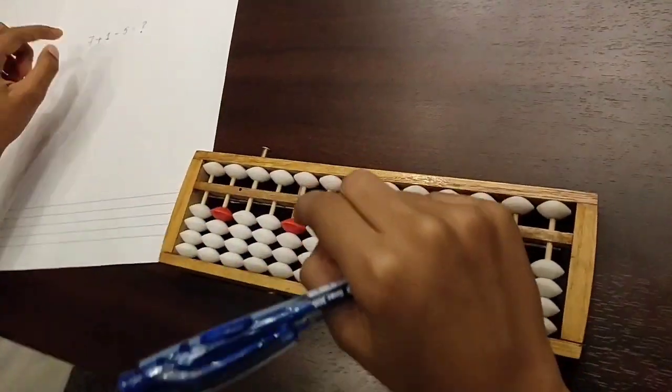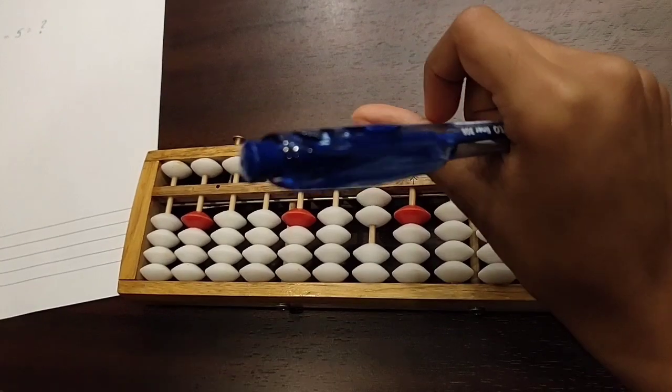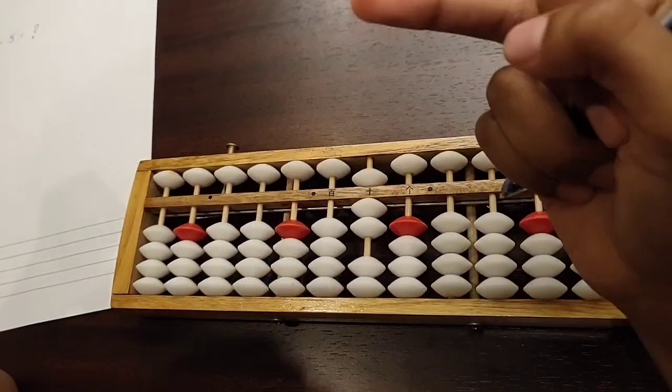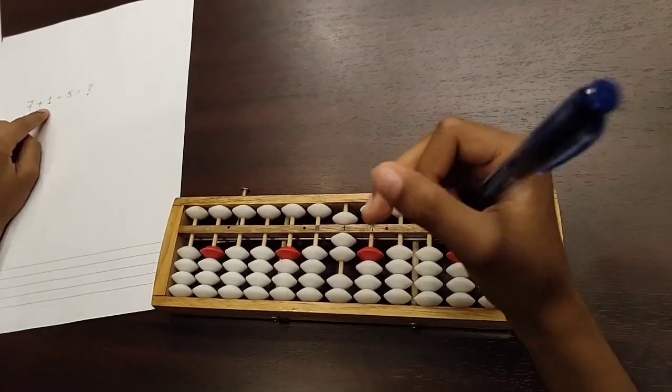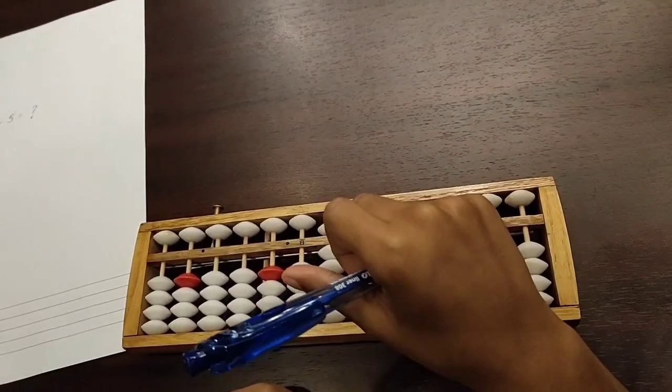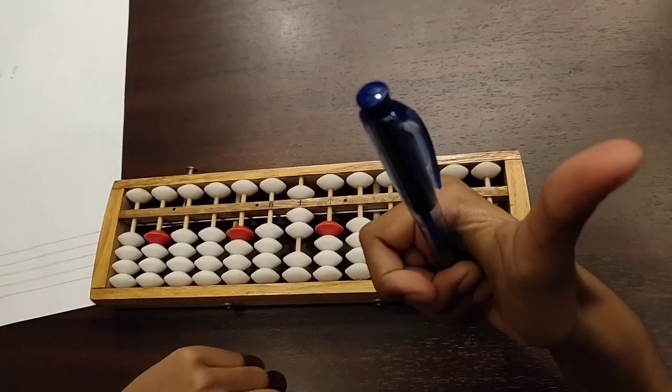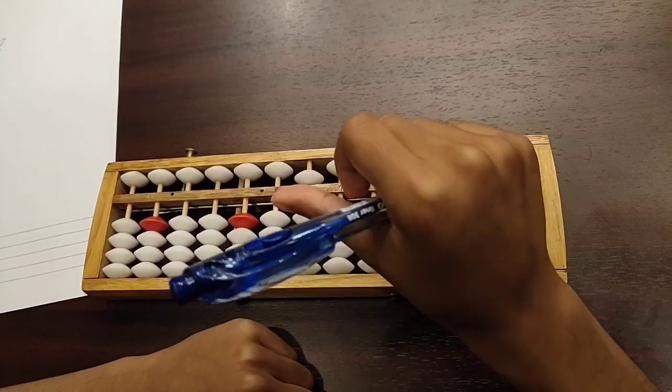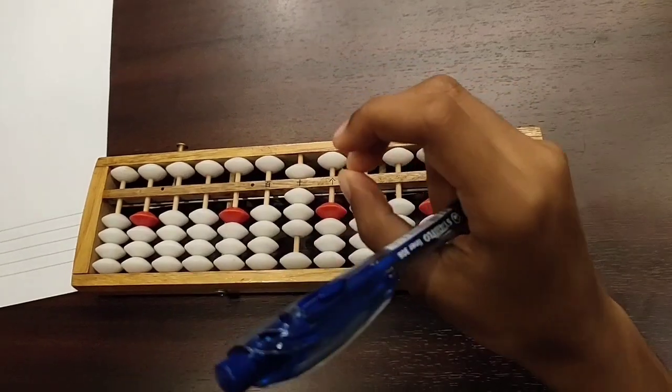So now the first number is 7. So you move 2 beads up with your thumb finger and the top bead down with your middle finger. Now you add 1 bead up. But do we have enough beads? If you said yes, it would be correct because we have 2. So you move the bead up. So now we have the new number 8.